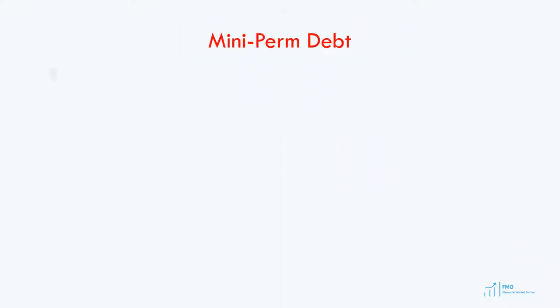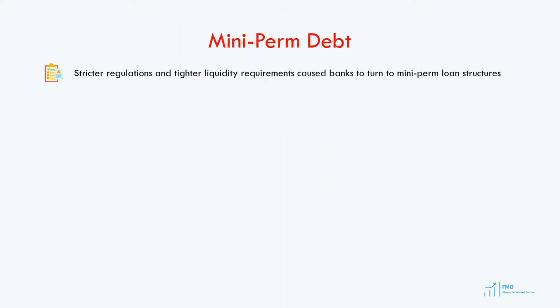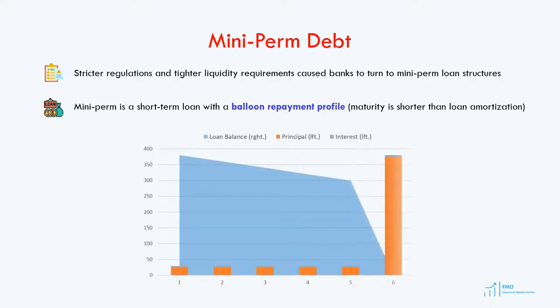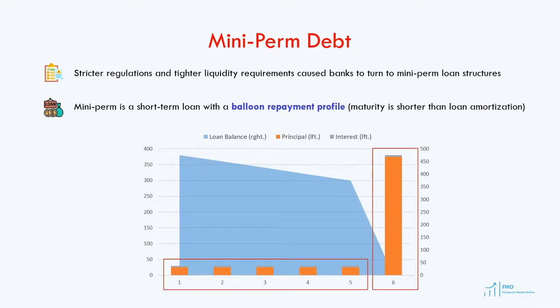Stricter bank regulations and liquidity requirements made banks turn to mini-perm loans to fund project finance transactions. The mini-perm loan is a short-term loan with a balloon repayment profile, where the largest part of the loan is repaid at maturity. You can see on this chart the typical balloon repayment profile — small principal repayments followed by a large principal repayment.